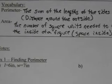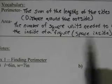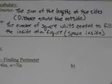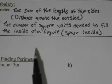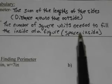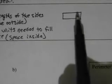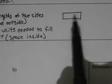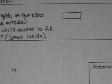Area, on the other hand, is the number of square units needed to fill the inside of a figure. Basically, it's the space inside. If we're talking about the same rectangle, it's how much space is inside this rectangle. So let's see about finding perimeter and area.